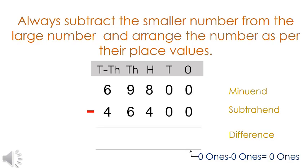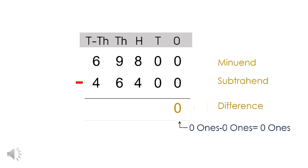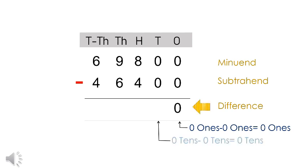Remember to arrange the numbers as per the place value chart. First write the minuend, that is 69,800. Under the minuend, write the subtrahend, that is 46,400. Now begin subtracting from the right-hand side — the ones column: zero ones minus zero ones equals zero ones. Write zero in the ones column. In the tens column, zero tens minus zero tens equals zero tens. Write zero in the tens column.